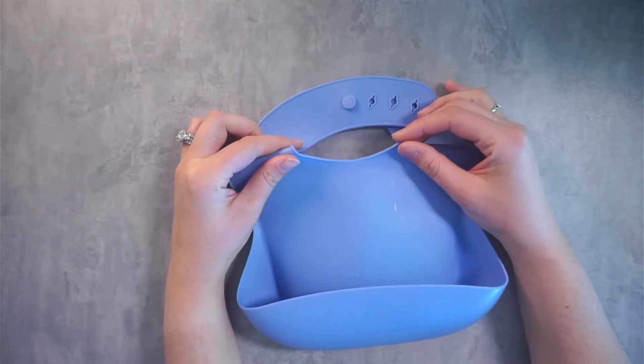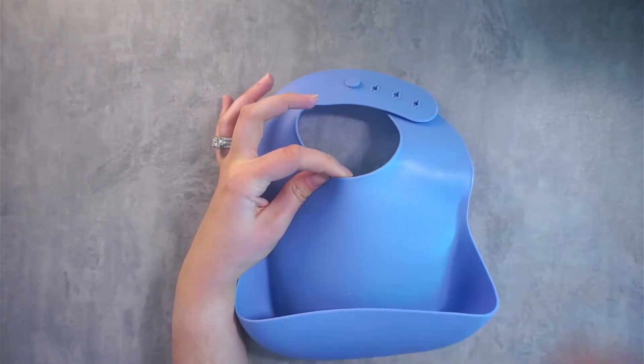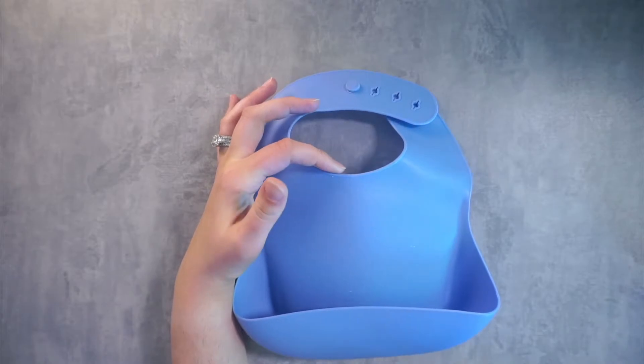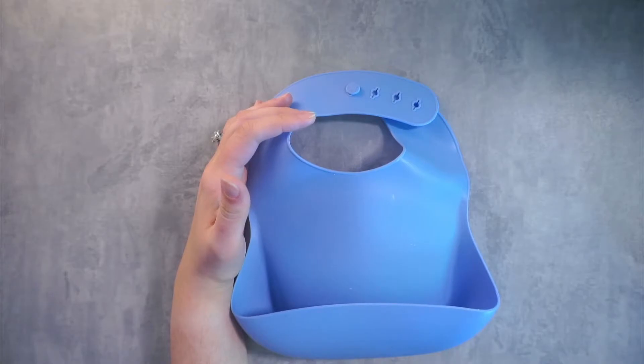Since this is silicone, it can sometimes get stuck on his chin and then the food falls underneath and gets on his clothes, but I think that's just because he's so young still.